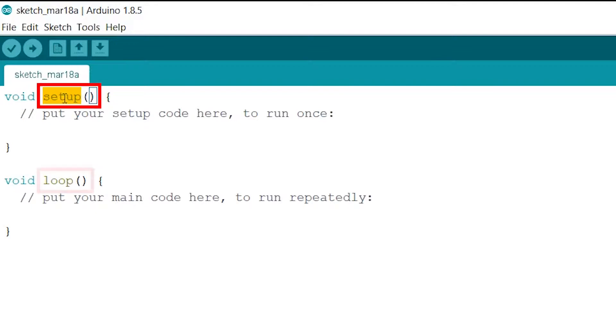The functions setup and loop are done behind the scenes by the Arduino library itself. So we can't give parameters to that. If you add some of your own functions, this may be possible.